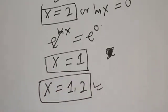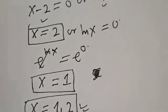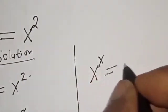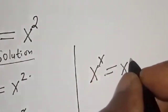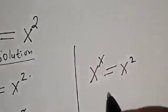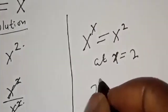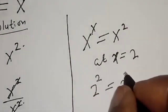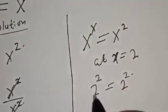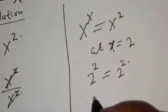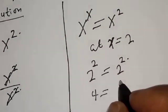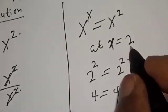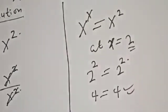Let's check to confirm if our answers are correct. Using s raised to power s equals s squared, we check s equals 2: 2 raised to power 2 equals 2 squared, which is 4 equals 4. We satisfy the given equation at s equals 2.